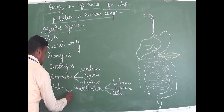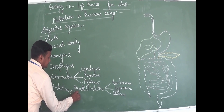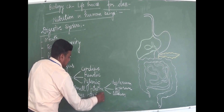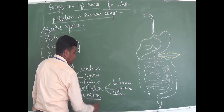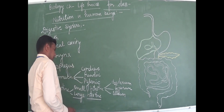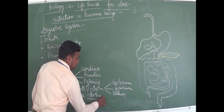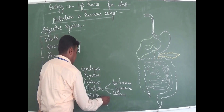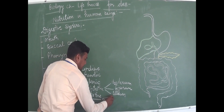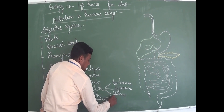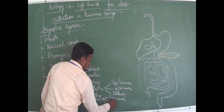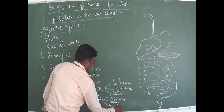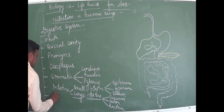Then large intestine — also a tubular part. After breakdown of food, the material comes to the large intestine. Large intestine has three parts: cecum, colon, and rectum. The last part of the alimentary canal is the anus.